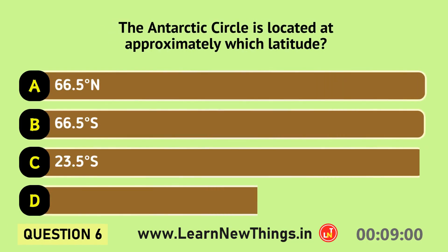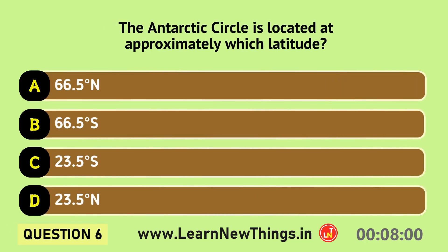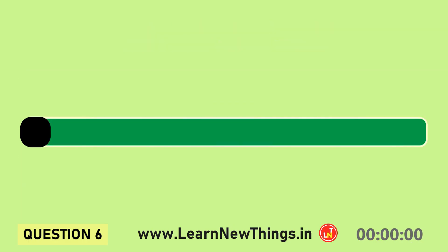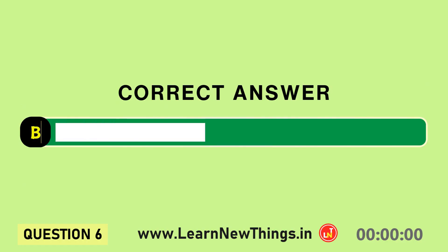The Antarctic Circle is located at approximately which latitude? 66.5 degrees south.